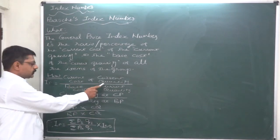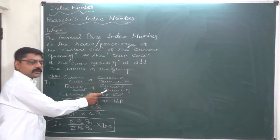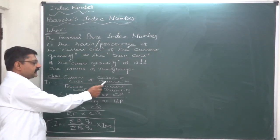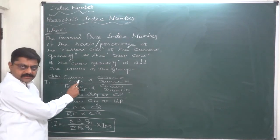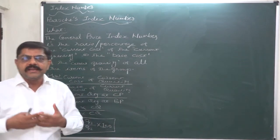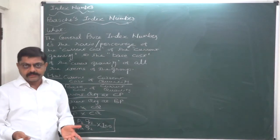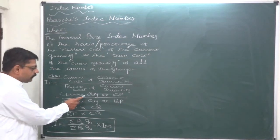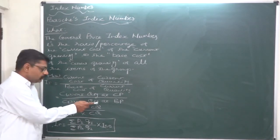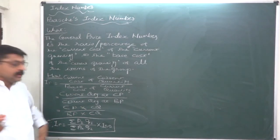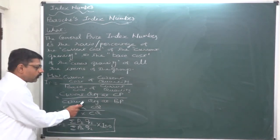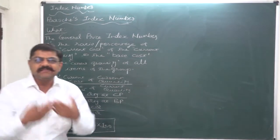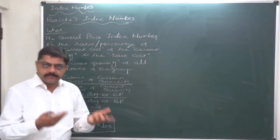Current cost of current quantity to base cost of current quantity. By current cost, we mean the current quantity is considered at current price — that means the exact total cost we actually paid during the current year. The denominator is the base cost, where we assume that the current quantity is consumed at base price, as if the current quantity is consumed at base year price.